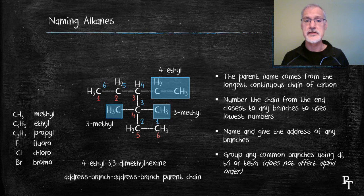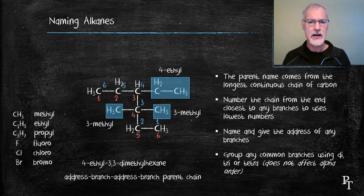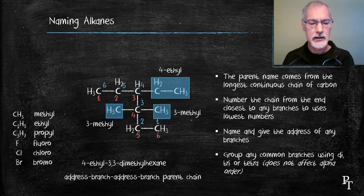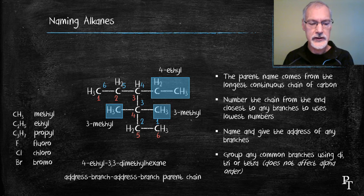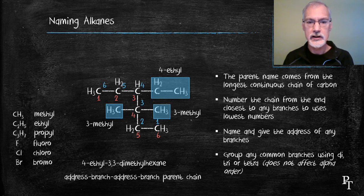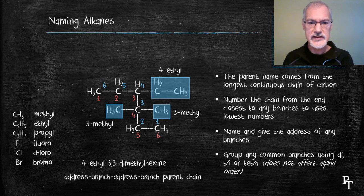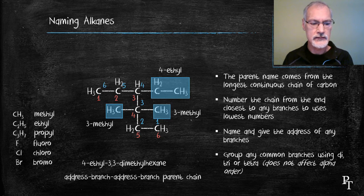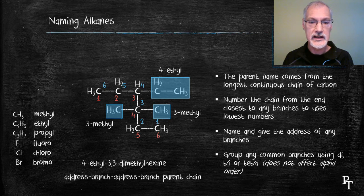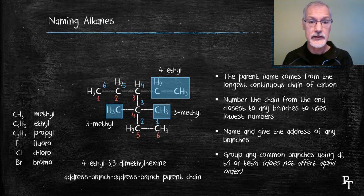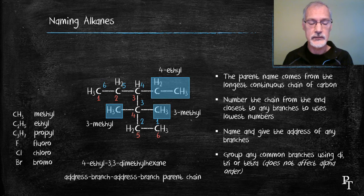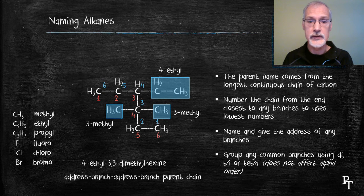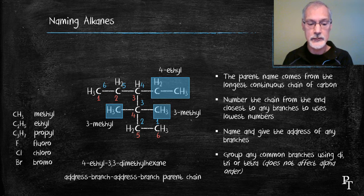Now that's the use of the blue numbers. How would this have changed if I'd used the red numbers? Well, I then would have had to call this three ethyl four, four dimethyl. You can see here that this is a lower combination of numbers. The 4, 3, 3 is a lower combination than 3, 4, 4. So the name I had below here would be the correct one. And we should use the blue numbers because they give us a lower combination of numbers.